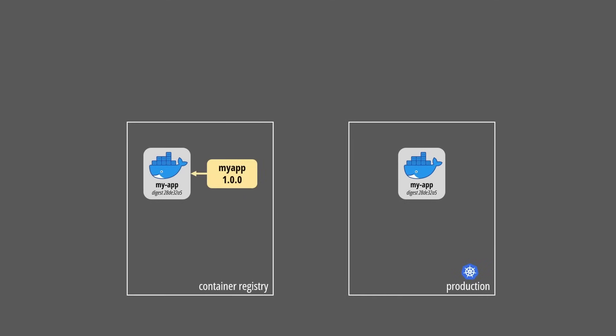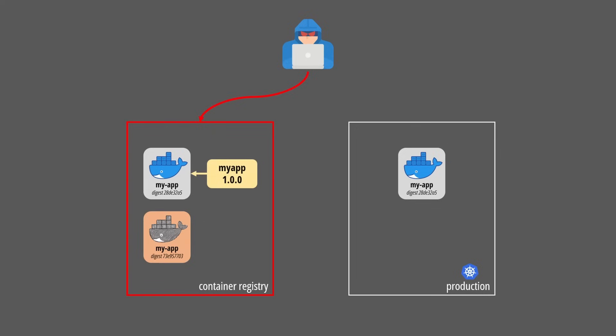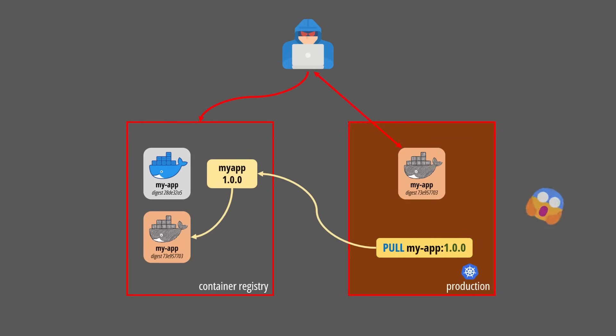This is a perfect vector for a sneaky software supply chain attack. For instance, a malicious actor with access to our image registry can update an image tag to point to a corrupted version of our application. Once deployed in an environment, the malicious image could be used to exfiltrate sensitive data. So how do we solve the issue?